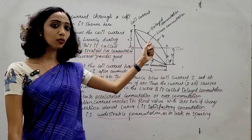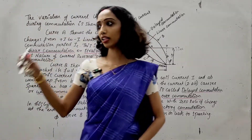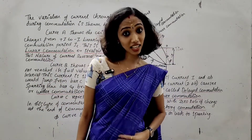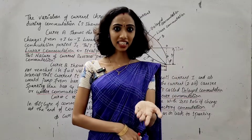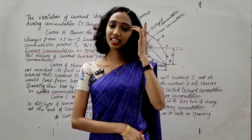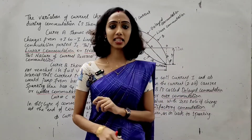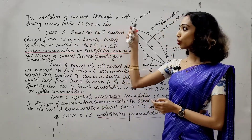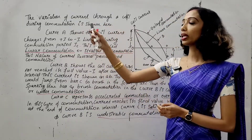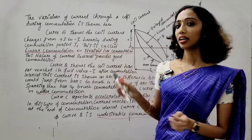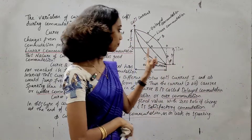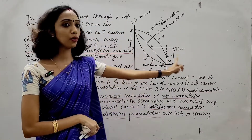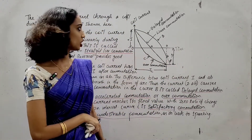This is the third graph. The variation of current through a coil during commutation is shown here. You can see that this figure is important.